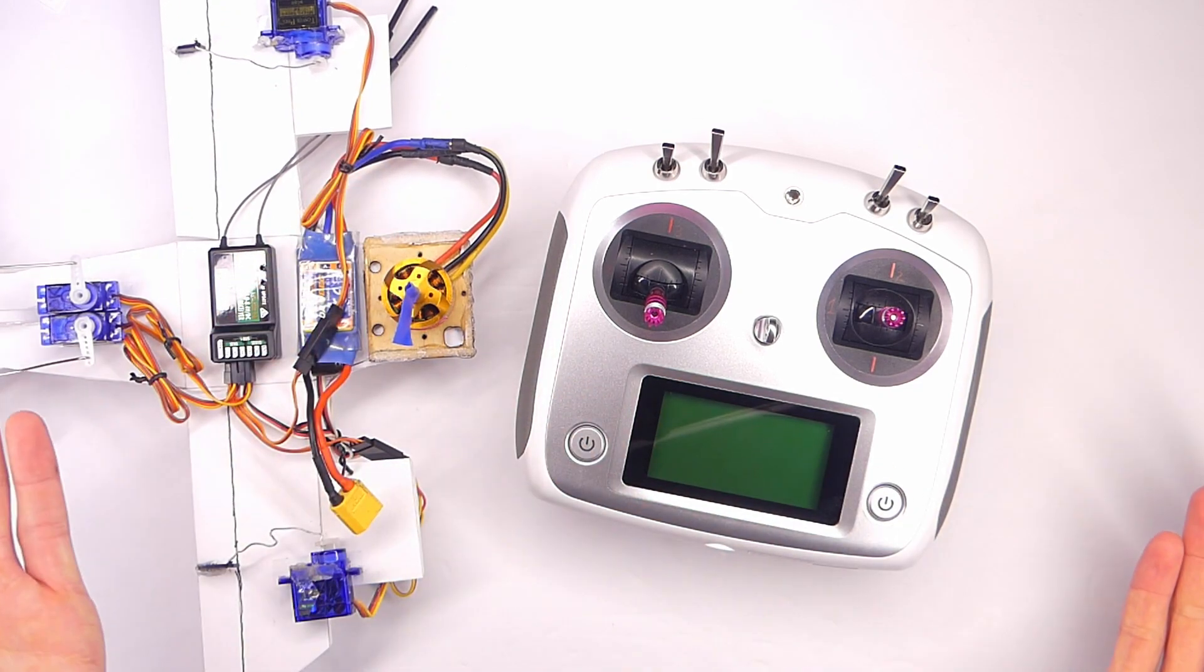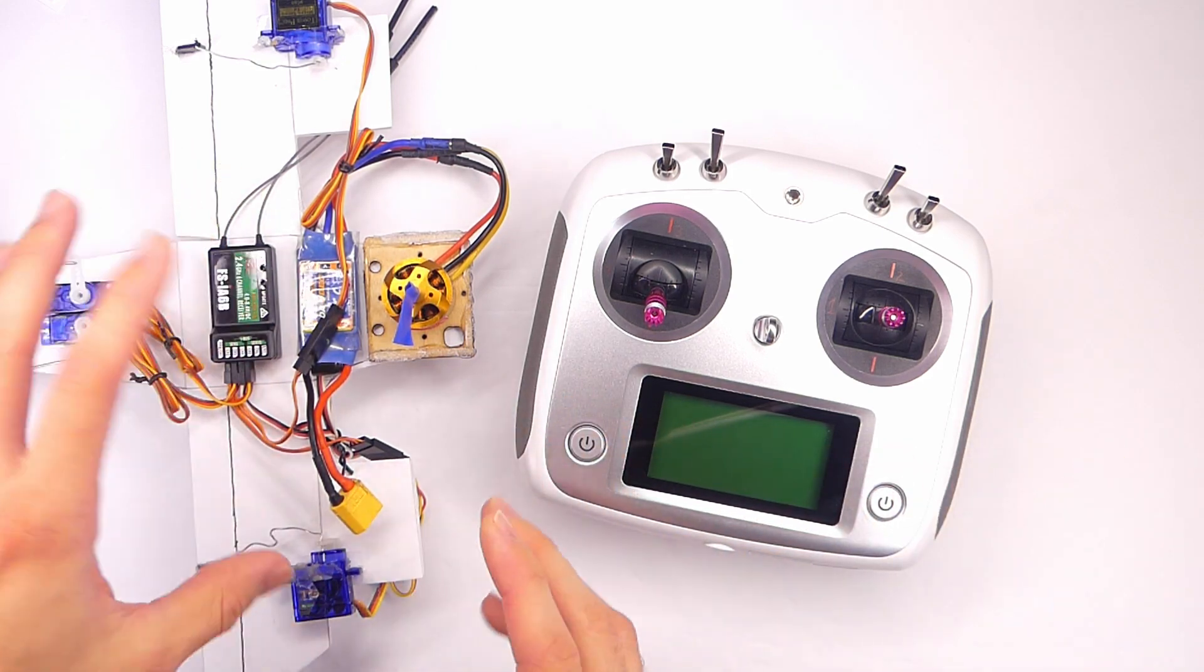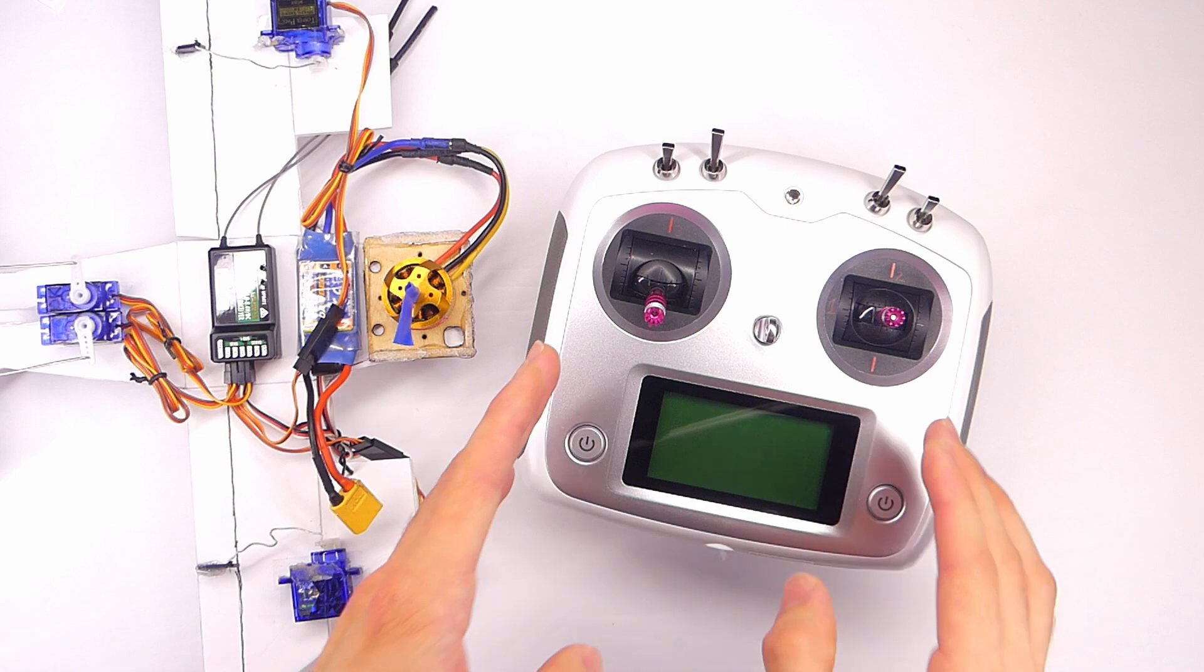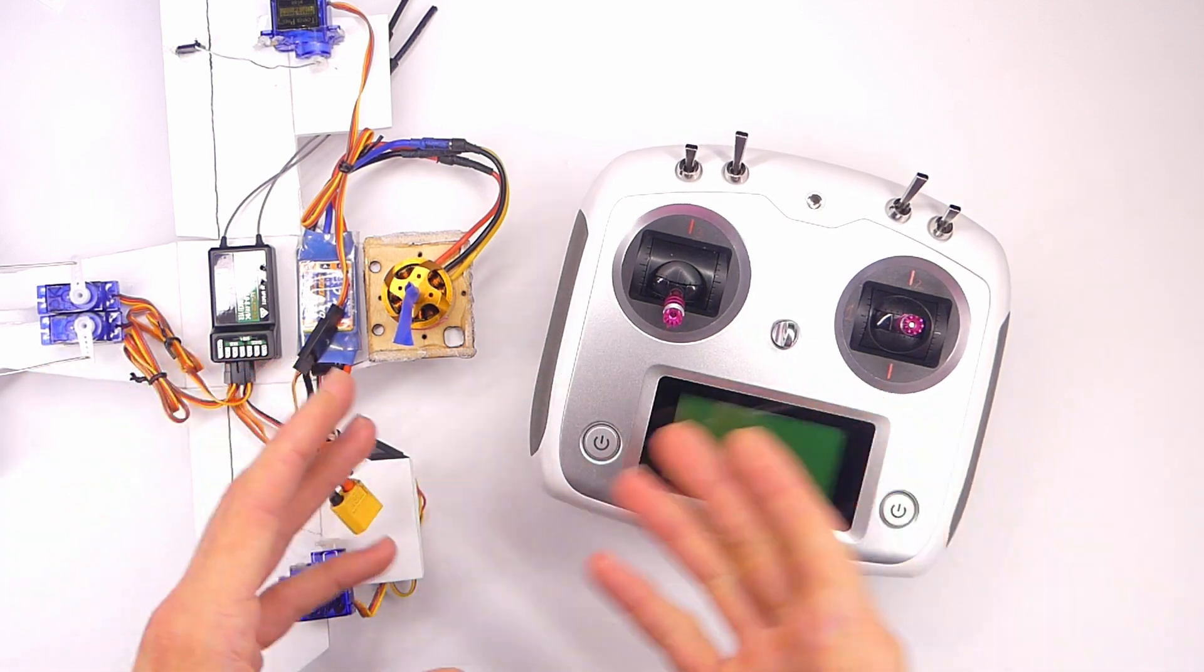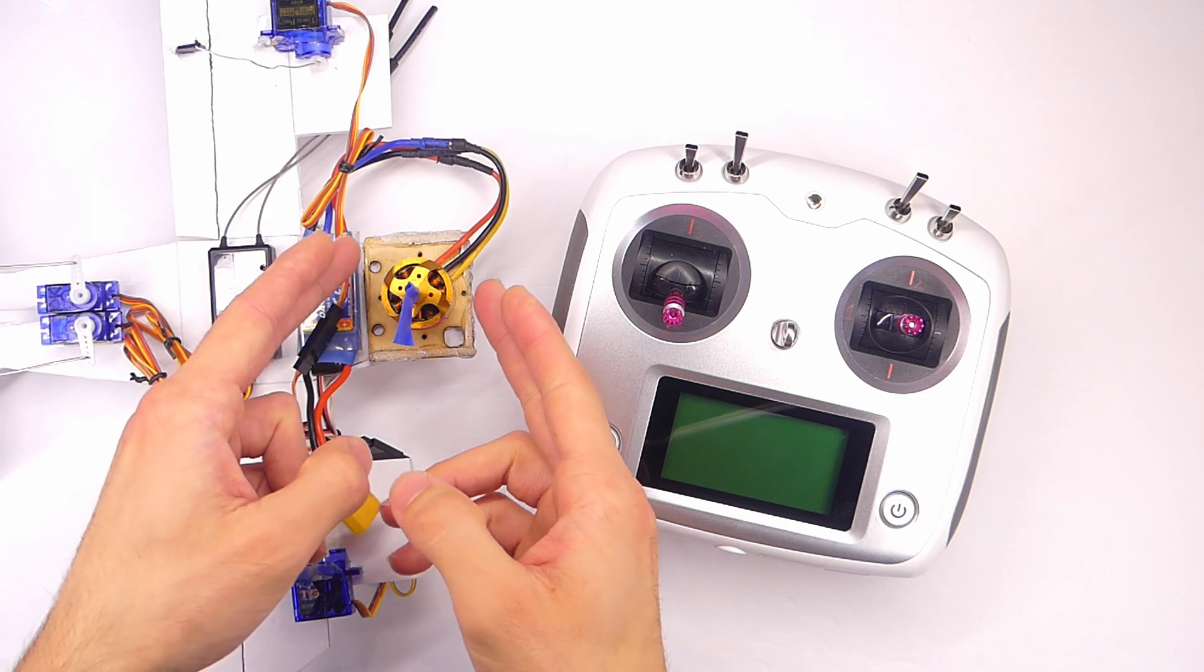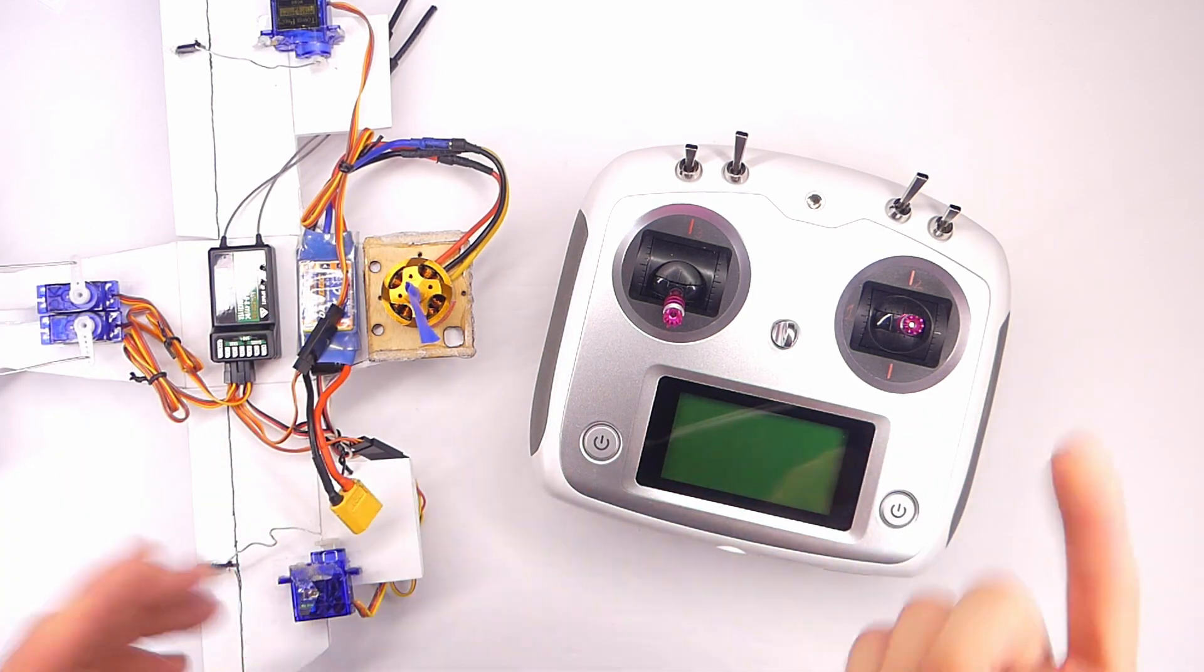What's a failsafe? Well a failsafe is what the airplane controls will default to if you lose connection with your transmitter. Typically, what I'll show you here, is that means your motor will just die. It will stop turning, it will stop spinning.